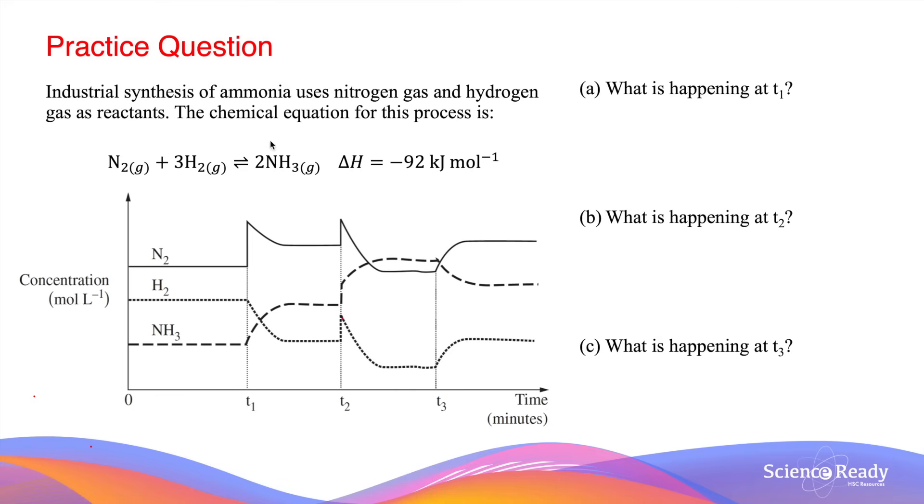We'll be using the Haber process, which is the synthesis of ammonia from nitrogen and hydrogen, to discuss the three different types of changes.